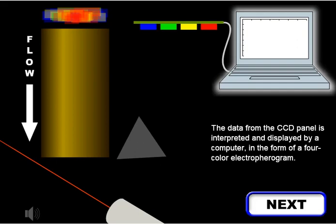The data from the CCD panel is interpreted and displayed by a computer in the form of a four-color electropherogram.